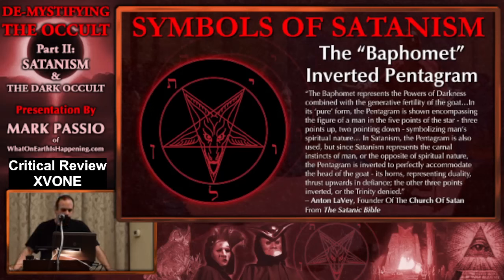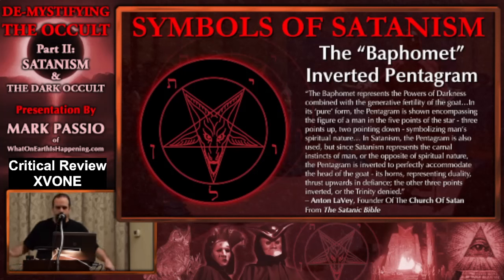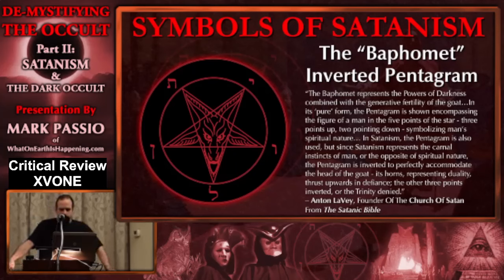They're still in my possession. The baphomet represents — and these are the words of the former high priest of the Church of Satan, Anton LaVey, from his book The Satanic Bible — the powers of darkness combined with the generative fertility of the goat.